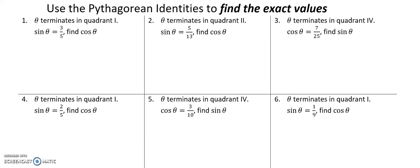This is pre-calculus, and this is the review assessment for topic four. In these first six problems, we're supposed to use the Pythagorean identities to find the exact values. The Pythagorean identity is cosine squared of theta plus sine squared of theta equals one. In order to solve all of these, I can take advantage of that to find the exact value for cosine — I'm not going to have to use arc sine or anything, because I know that sine squared plus cosine squared is one.